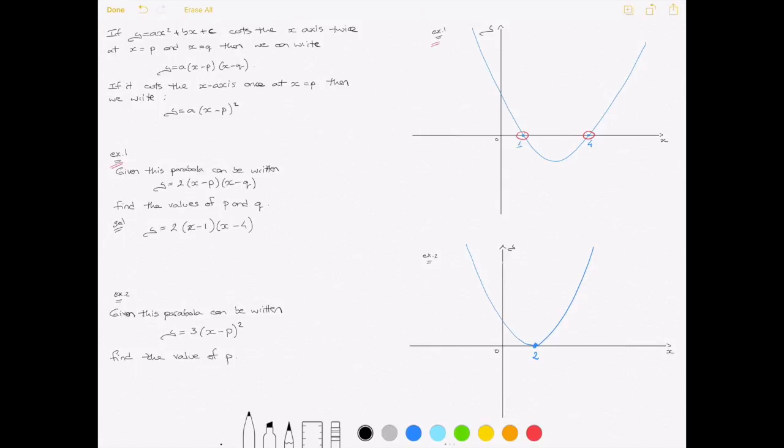So, just to clarify, I'm getting this value 1 here from this first x-intercept, and the value 4 here from the second x-intercept. Therefore, I can finally answer this question by stating that p equals 1 and q equals 4. And we're done.